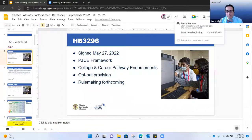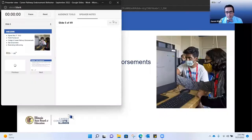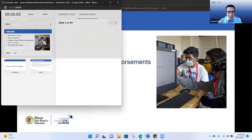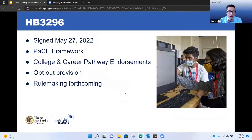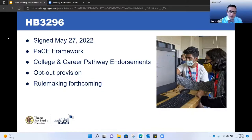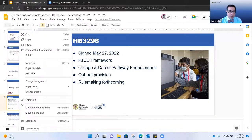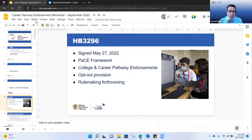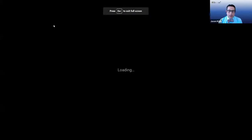Those four main elements were: competency-based education; transitional instruction — which today in Illinois includes both transitional math and transitional ELA; the career pathway endorsements; and the PACE framework. This legislation was passed through the General Assembly as HB 3296 this past spring, and was an update to the original Post-Secondary and Workforce Readiness Act.